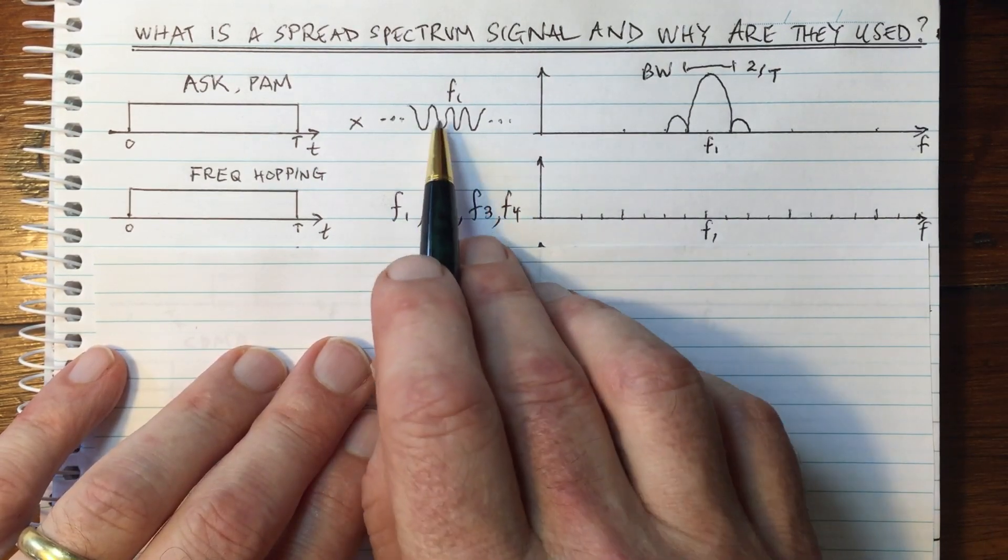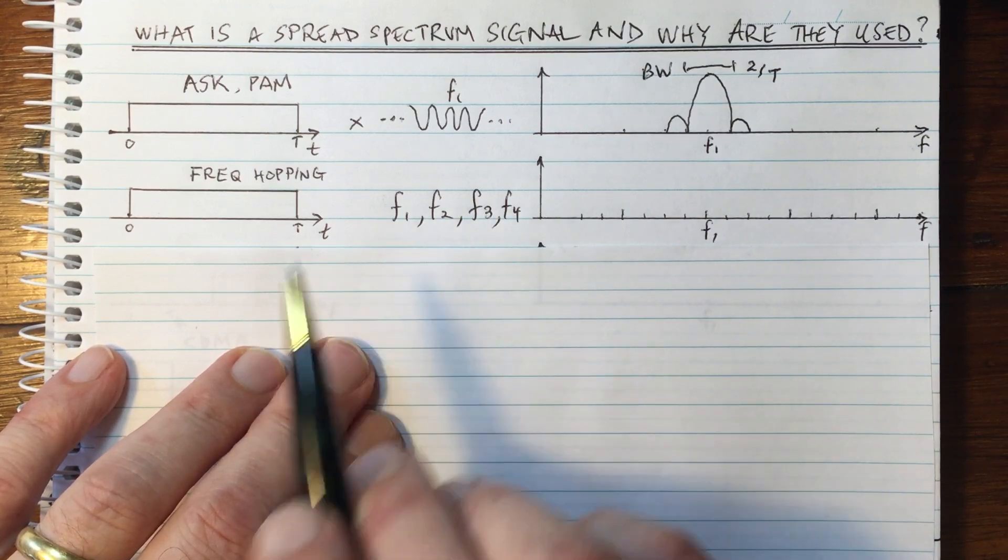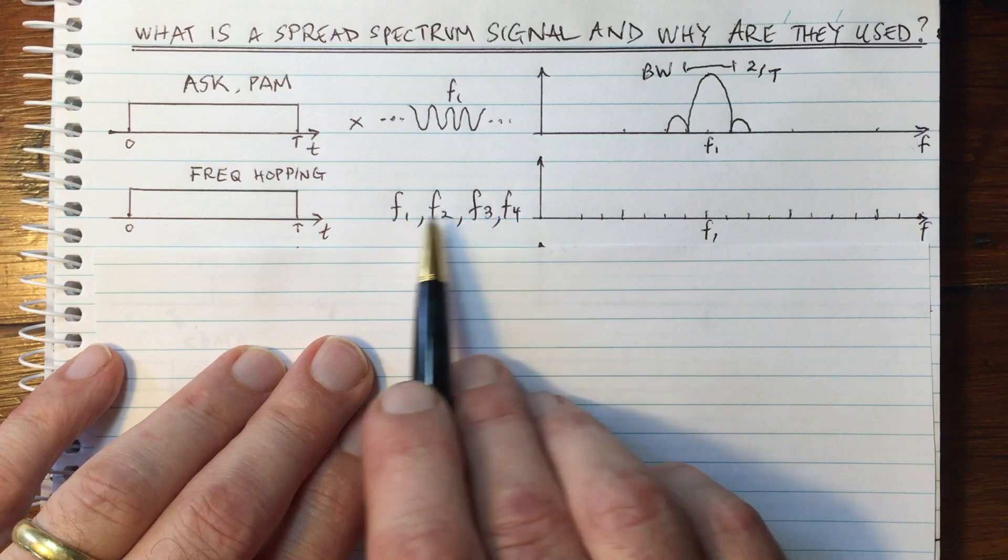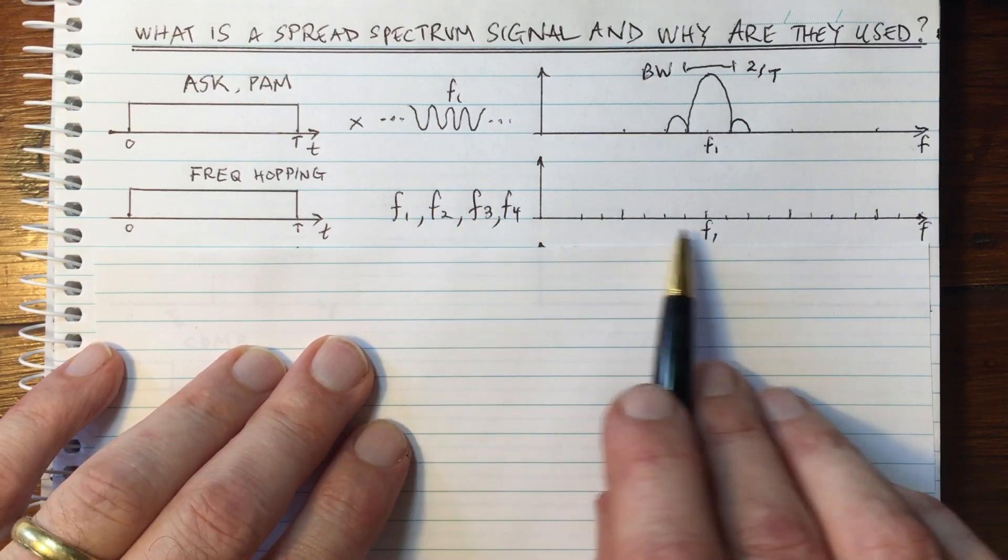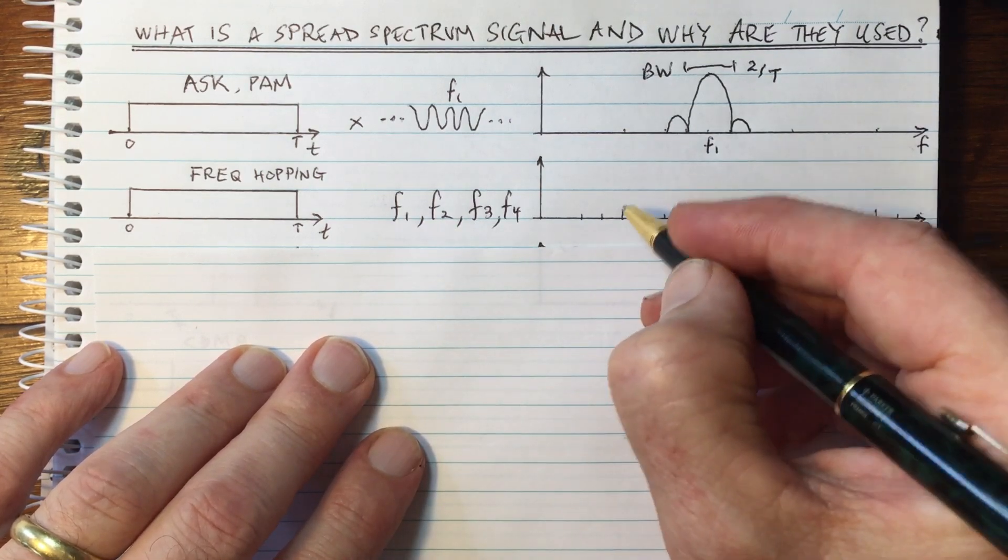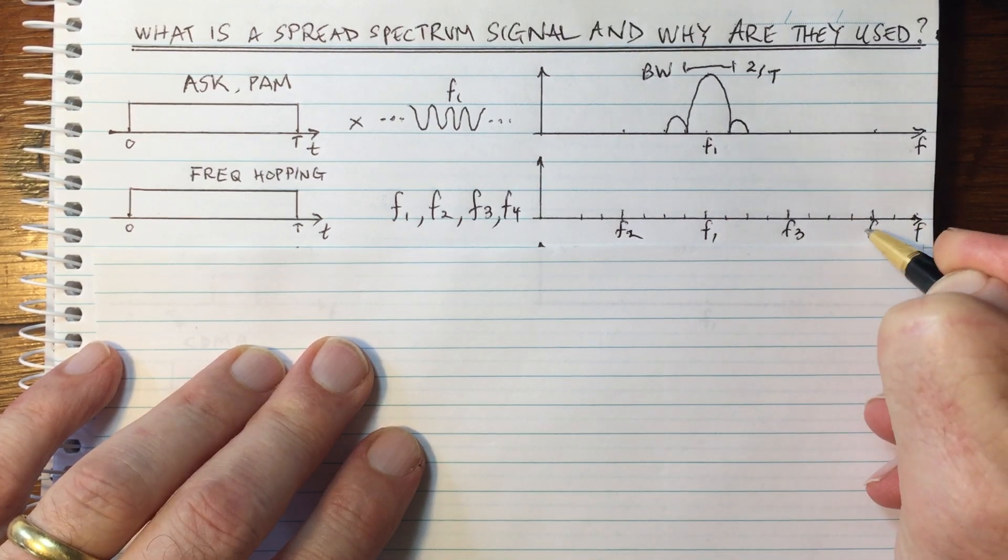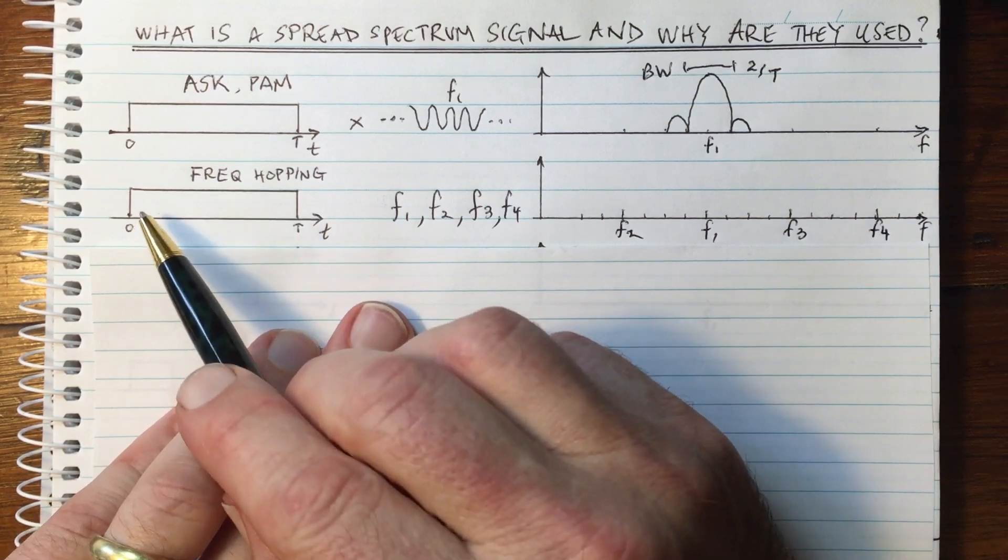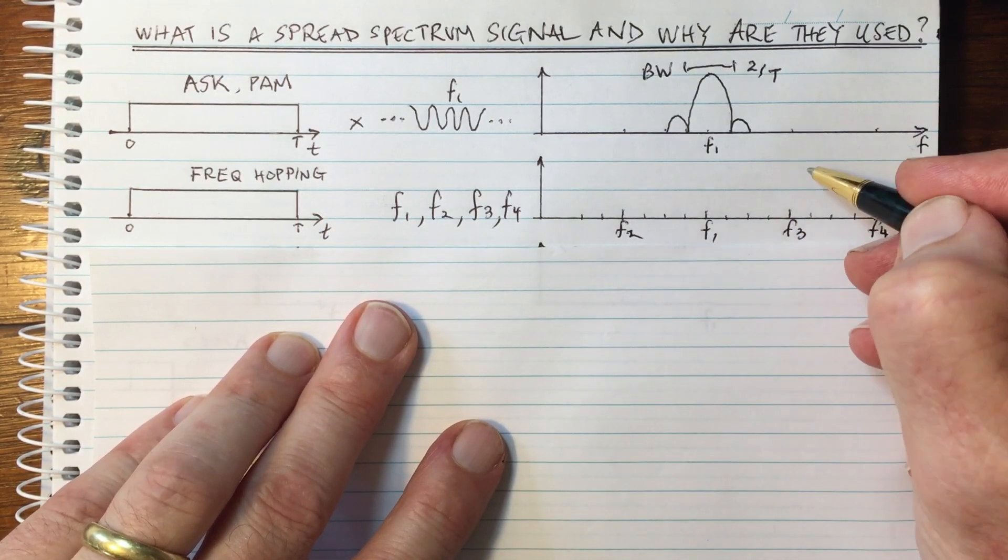So now instead of just using a single frequency, we are going to hop between them. So at any given time, we'll only be using one of these frequencies, but we're going to randomize the choice of hopping between them over time. So what does that do in the frequency domain? Well, we get to choose where these frequencies are. So let's say, for example, we chose that to be F2, this F3, this F4, for example. And let's say for the first symbol in the first time, it was chosen to transmit on F3.